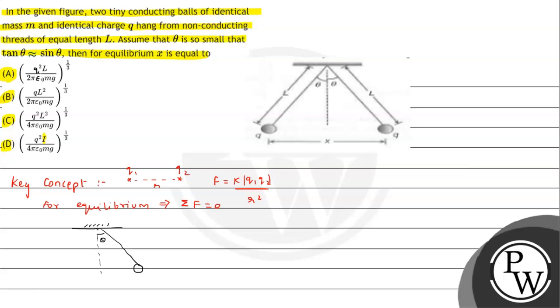It is making an angle theta. We will show first its weight mg in the downward direction, tension T in the string. If we take the string component along horizontal and vertical, we can say it will have a vertical component T cos theta in the upward direction and a horizontal component T sin theta in the horizontal direction. Since these balls are identical with the same charges, it will also experience an electrostatic force which is repulsive in nature.